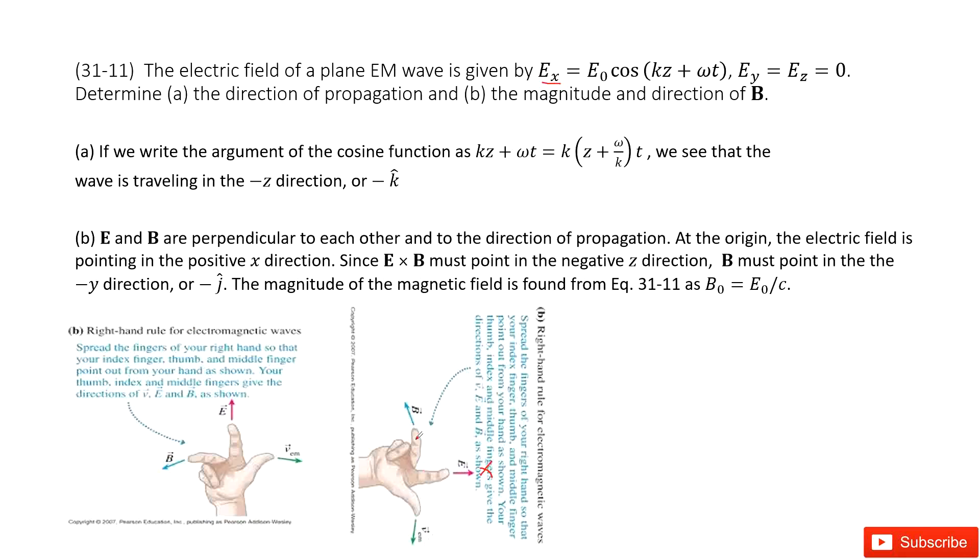From this, you can see what direction for propagation? Pointing to V. This is the negative K direction. You can use your right-hand rule to do this. So we find by the right-hand rule it's the negative K direction.